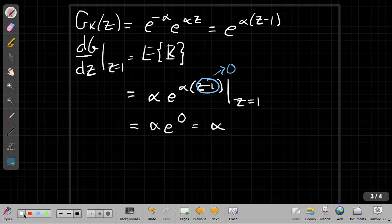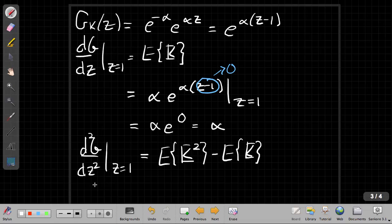If I wanted to find the variance, I could go on though and take another derivative. So to find the variance, I take the second derivative with respect to z, because I'm going to need that to get the second moment. If I take the second derivative and evaluate at z equals 1, I get the second moment minus the mean. But I already know the mean, so I can add that back in to fix things.